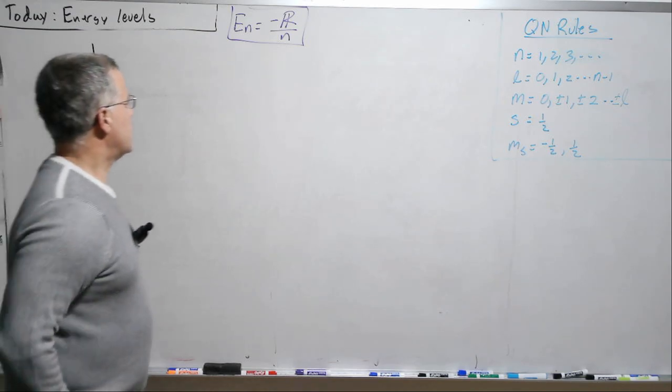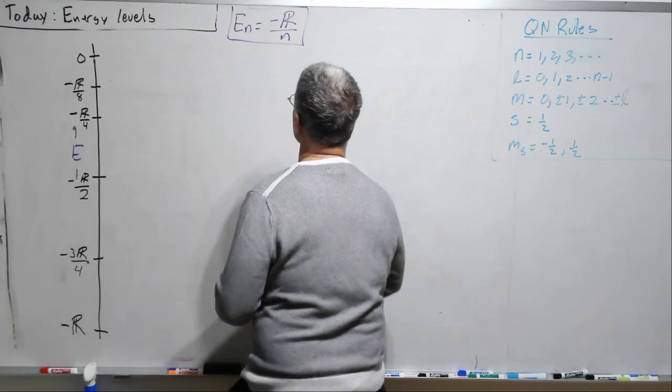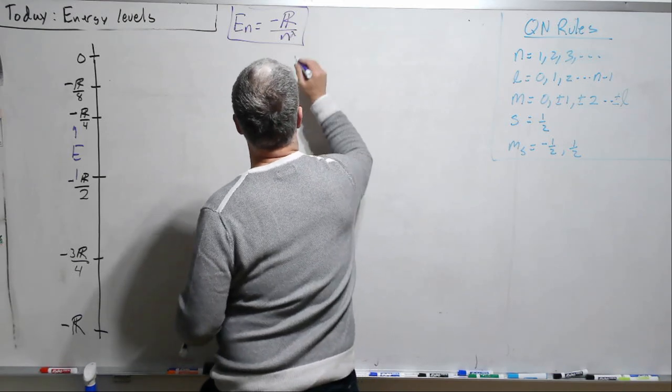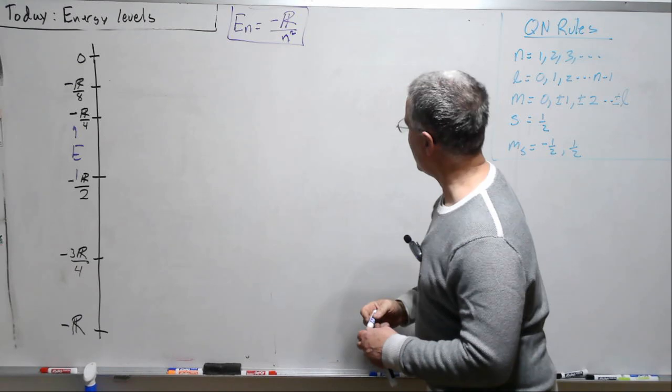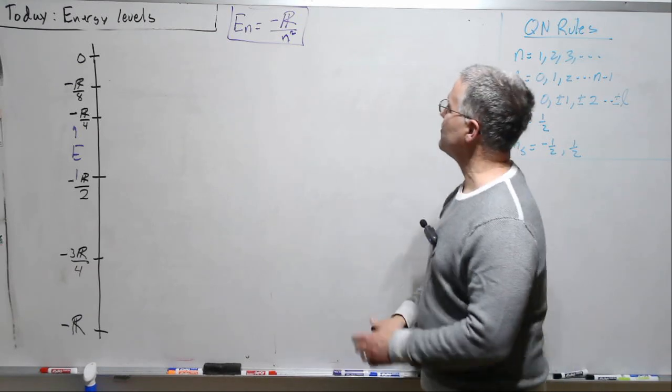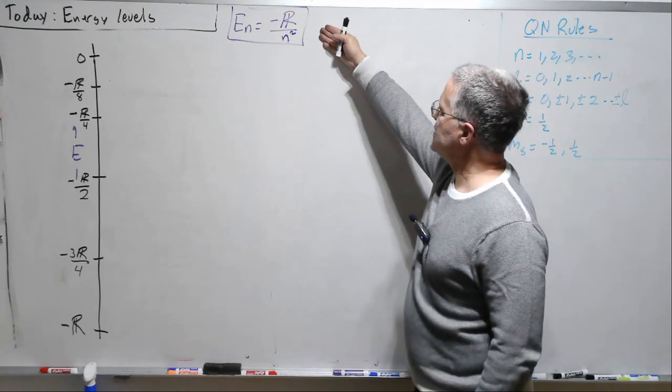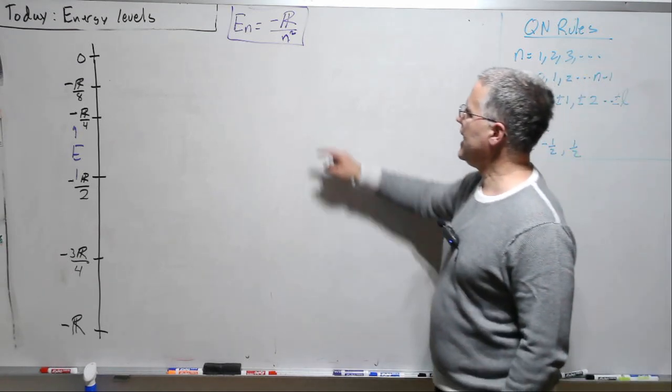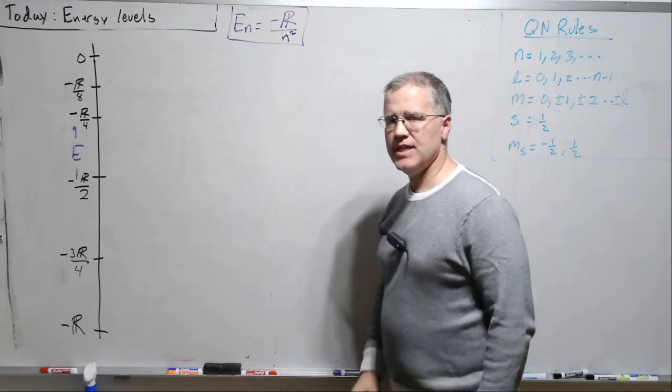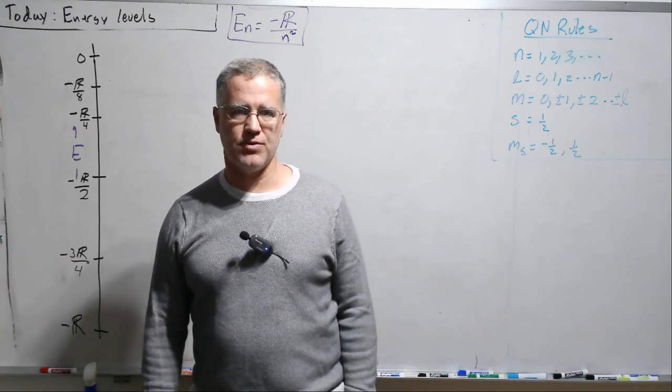Okay, well the energy. There's a couple mistakes here. Let me get my mistakes out before we get any further. So En is minus Rydberg over n squared, so the energy depends only on the principal quantum number.